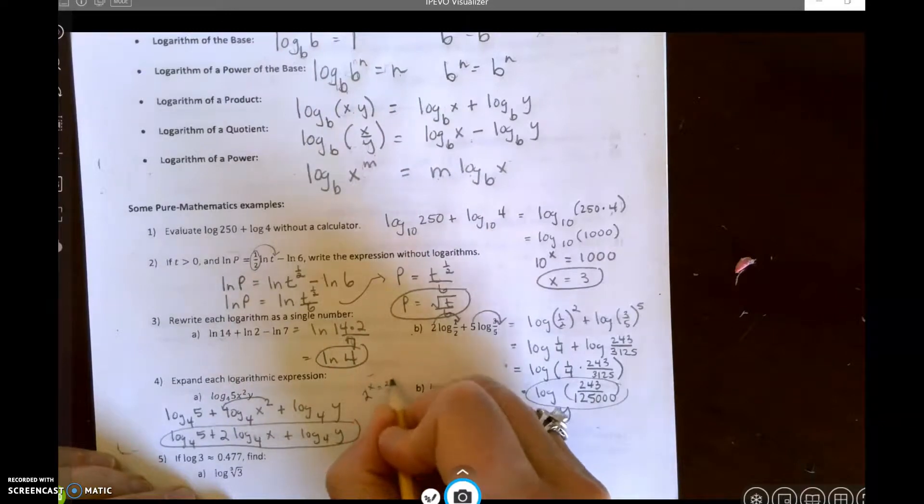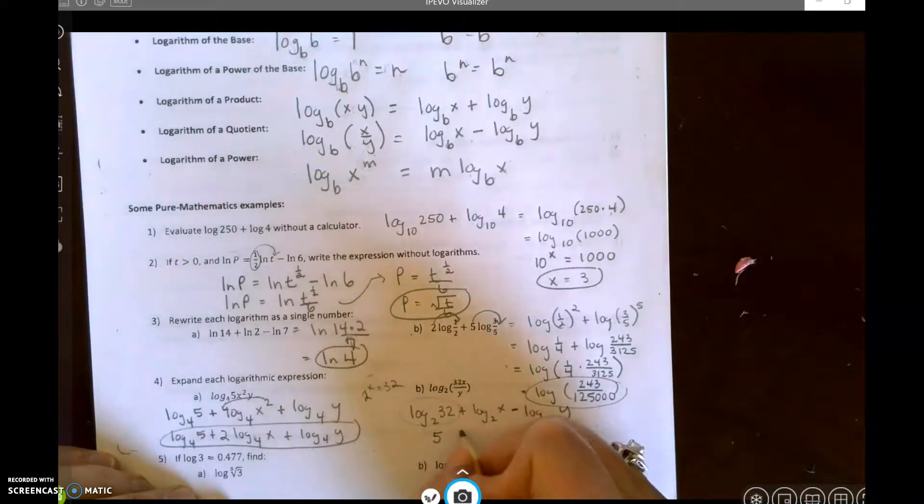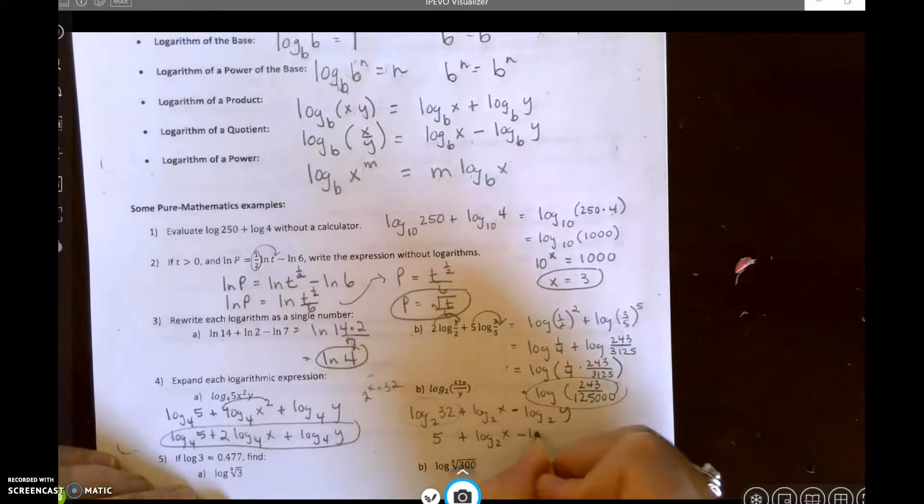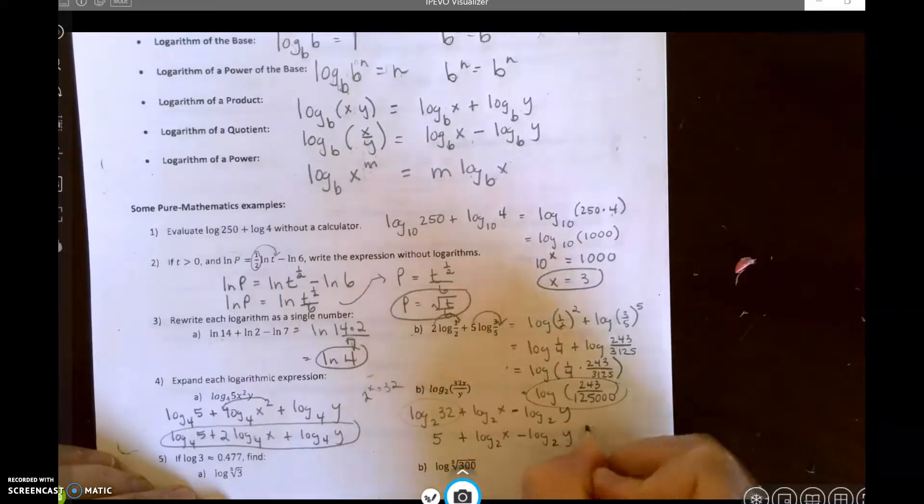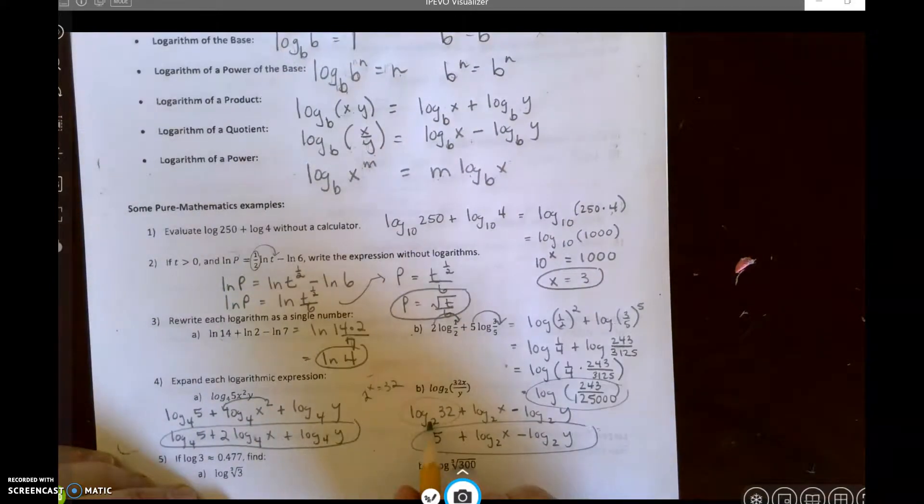Because this right here means 2 to what power is 32? And it's 2 to the fifth, so this is just 5 plus log base 2 of x minus log base 2 of y. So whenever I can simplify, I do.